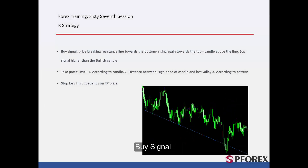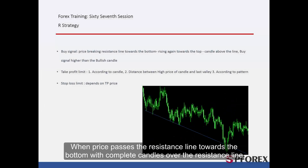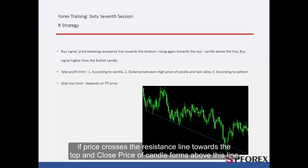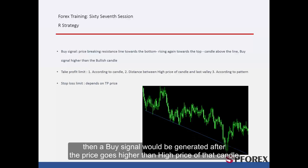Buy signal: When price passes the resistance line towards the bottom with complete candles over the resistance line and then returns to the resistance line — if price crosses the resistance line towards the top and the close price of a candle forms above this line, then a buy signal is generated after price goes higher than the high price of that candle.